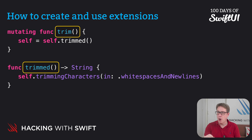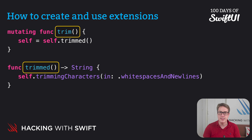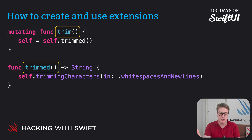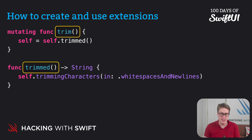For example, there's one property I like to add to strings called lines. This breaks the string up by line breaks using a method called componentsSeparated(by:), which breaks up by a boundary you specify — like new lines or whitespace — and returns a string array. Let's do it in Xcode to see it easily.